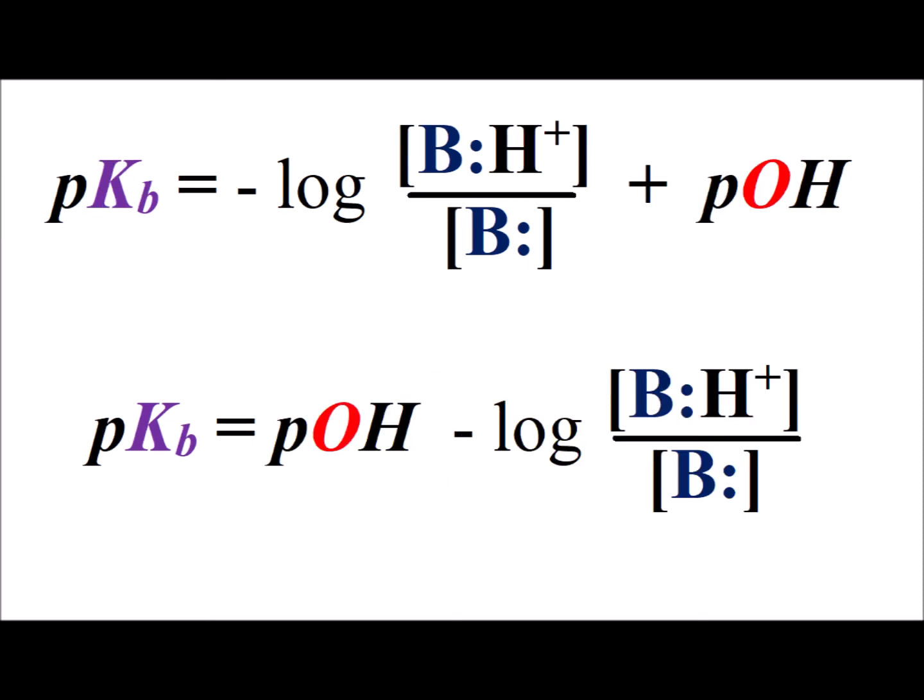Now we recognize that we can use the commutative property of addition on the right-hand side to switch the places of the two terms, the pOH and the negative log of the ratio of the concentrations of the protonated base to the unprotonated base.